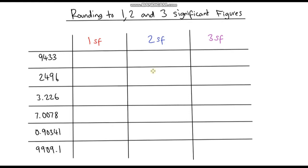Hello and welcome to another video on significant figures. In this video we'll be looking at rounding to 1, 2 and 3 significant figures. Hopefully you watched the previous video — if you did, you should now be able to identify significant figures and understand what they are and why we use them. We're going to apply that to rounding, and this process is very similar to rounding to decimal places.